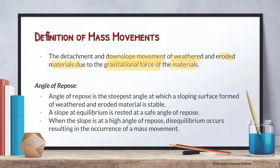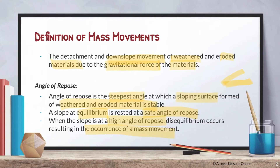The angle of repose is the steepest angle at which a sloping surface formed of weathered and eroded material is stable. It acts as a critical angle — if a slope exceeds this angle, mass movement will occur. A slope at equilibrium rests at a safe angle of repose. At high angles approaching vertical, conditions are more disastrous, whereas a gentle 45-degree slope has greater equilibrium among its materials.